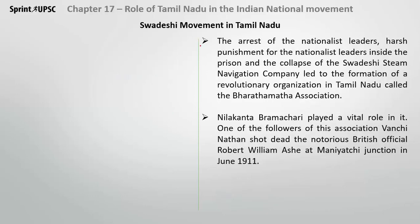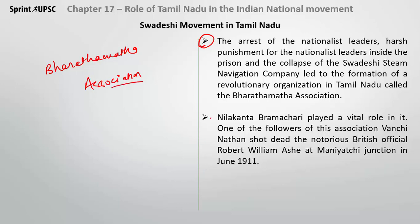After these important nationalist leaders were arrested and given harsh punishments, the Swadeshi Steam Company collapsed. But a revolutionary organization in Tamil Nadu came to the fore — the Bharat Matha Association. Neelakanta Brahmachari played a very vital role in it. The followers of Vanchi Nathan were notoriously shot down by the British.